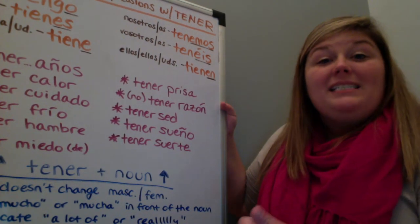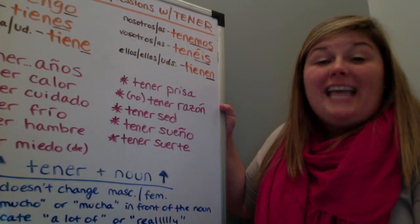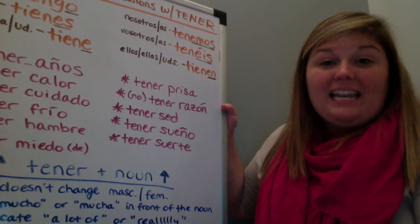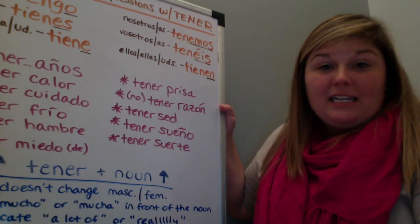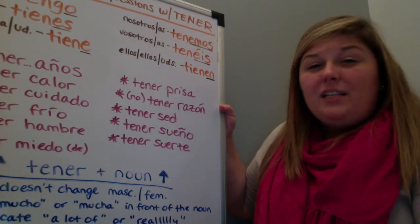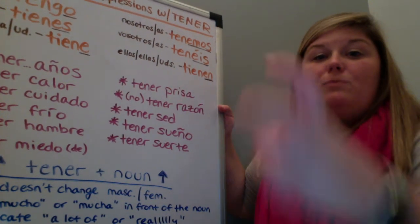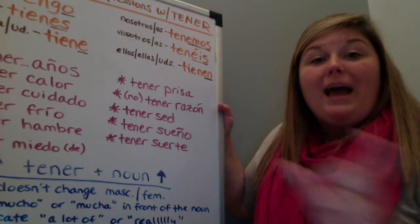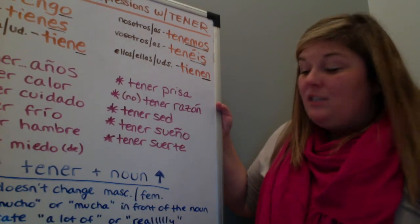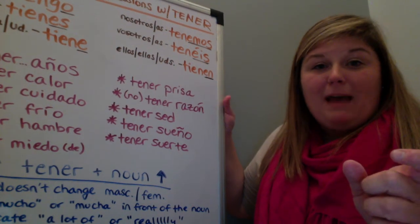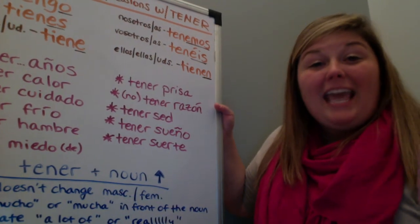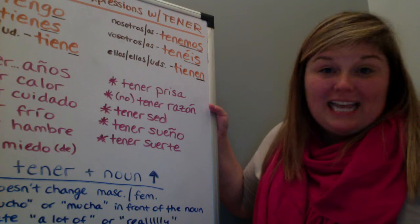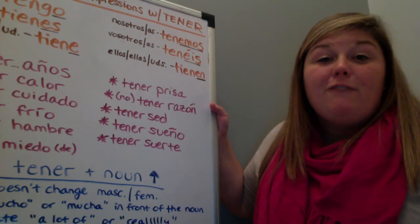Tener means to have, and the conjugations are tengo, tienes, tiene, tenemos, tenéis, and tienen. We use tener in a lot of idiomatic expressions where in English we might say 'to be' — like to be hot, to be cold, to be thirsty — but in Spanish we use tener followed by the noun. And we have two special formulas: tener que followed by an infinitive meaning 'to have to do something,' and tener ganas de followed by an infinitive meaning 'to feel like doing something.'